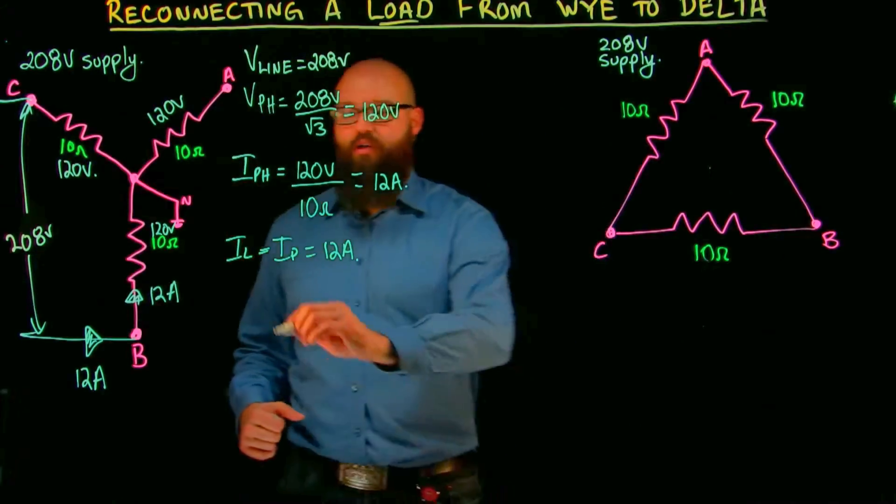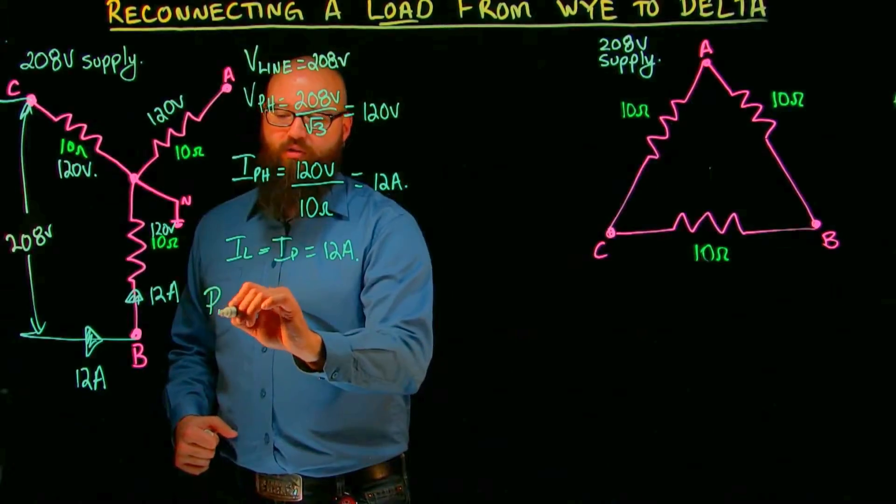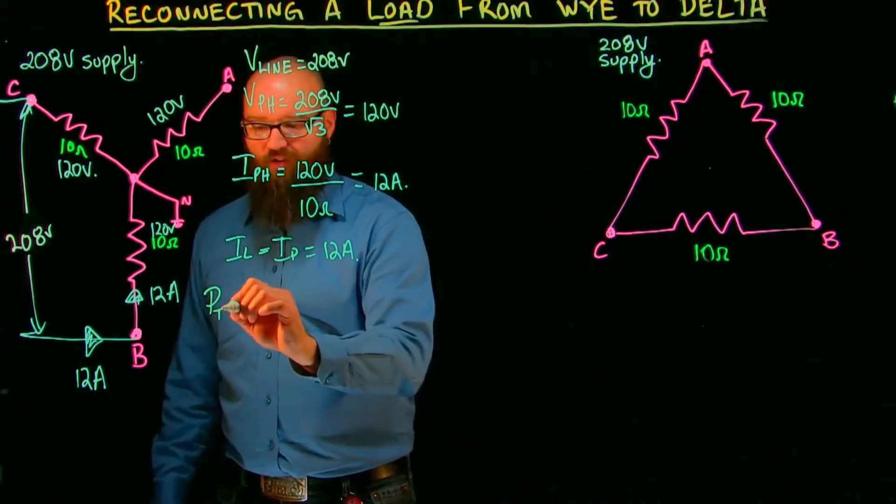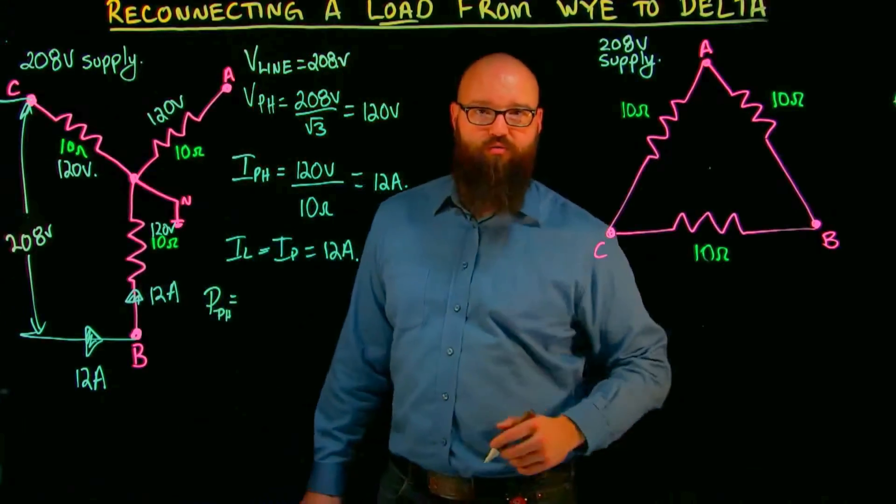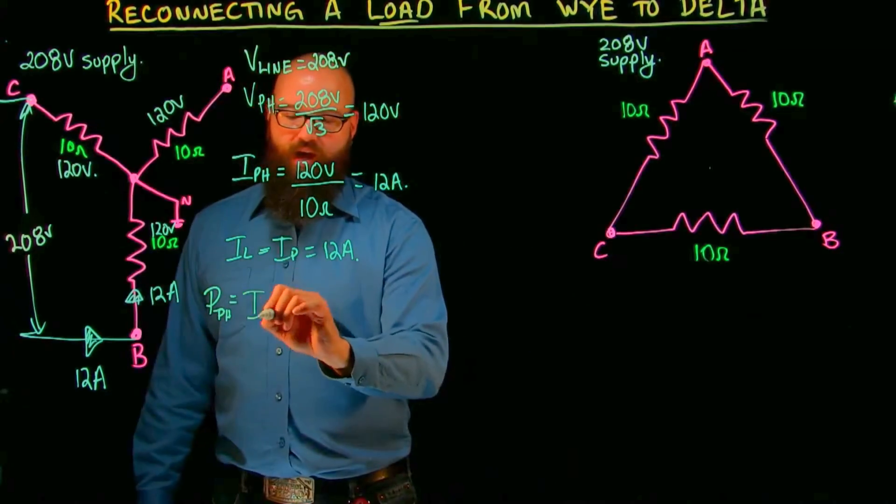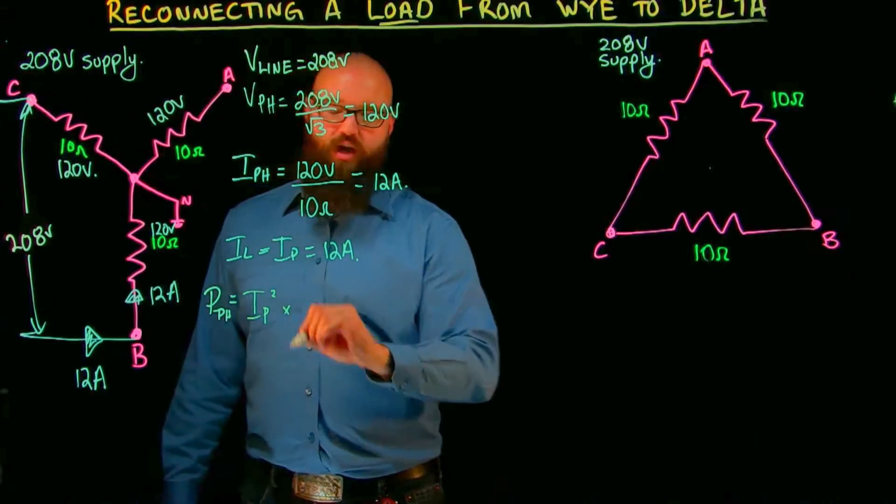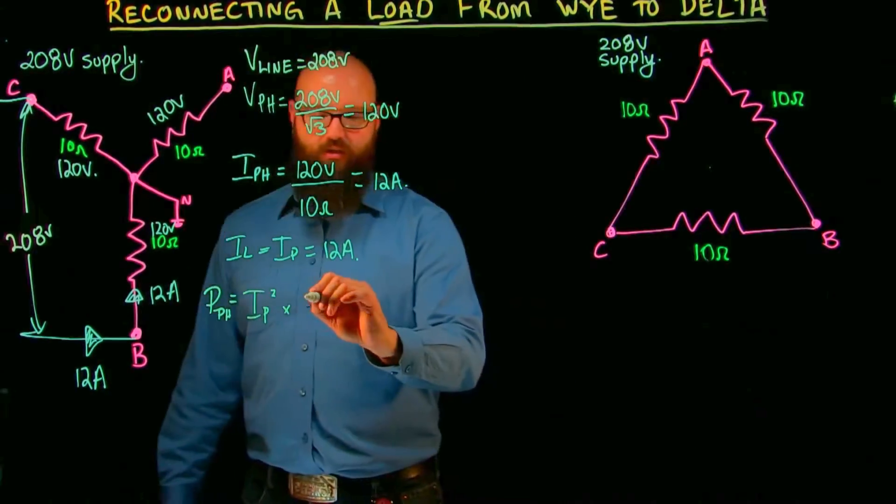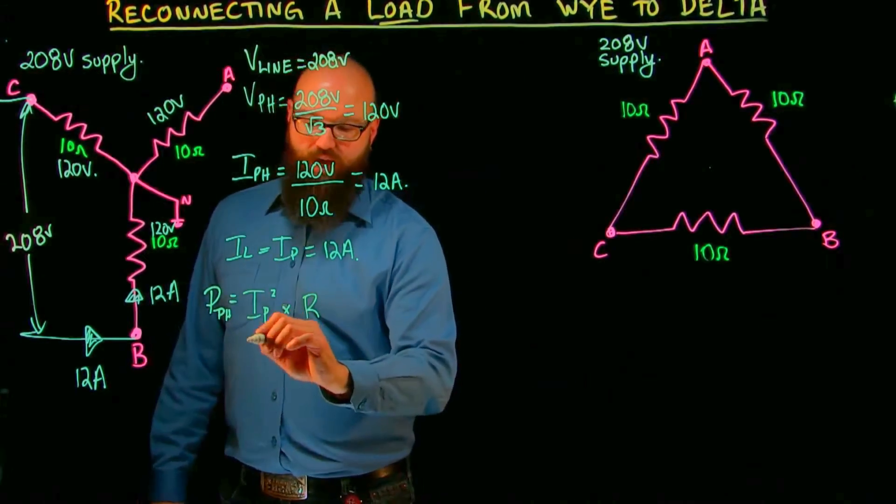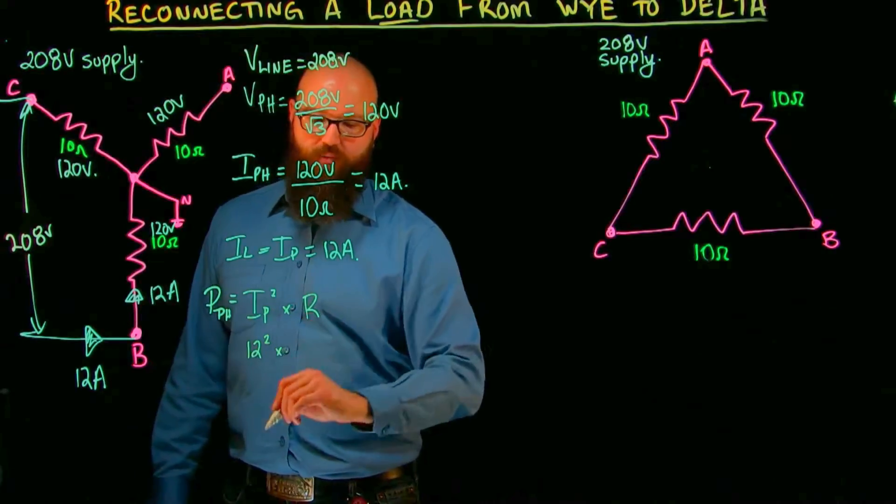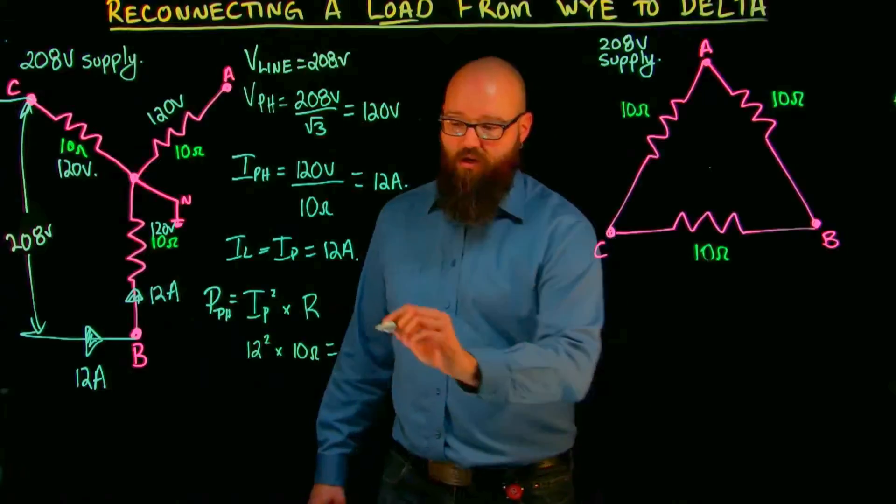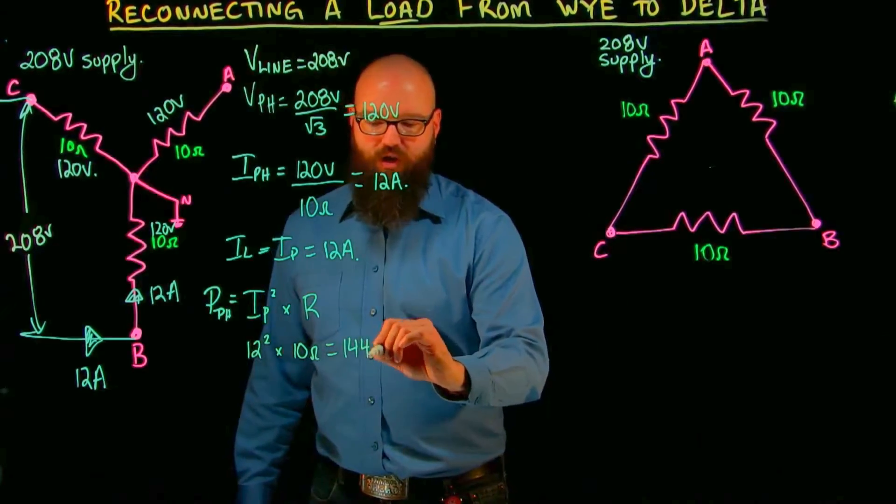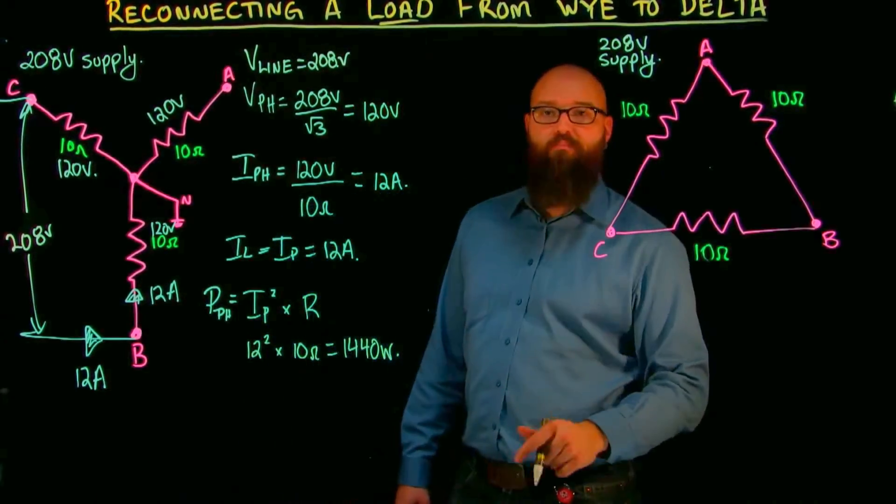We're going to use our formula, power total. Well, let's go power phase first. Power of one phase is equal to the current through that phase squared, so I phase squared times the resistance of that phase. In this case, we have 12 squared times 10 ohms, should give us around 1440 watts per phase.